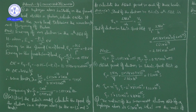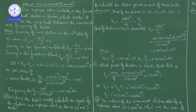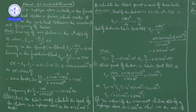In continuation to the last class, we are going to concentrate on the next continuing problems. In our previous class, we completed up to problem number 5 and now we start with problem number 6. A hydrogen atom initially in the ground level absorbs a photon which excites it to the N equal to 4 level.